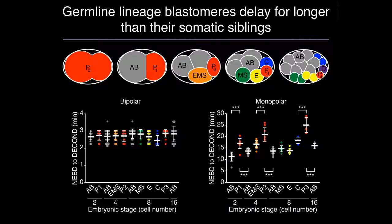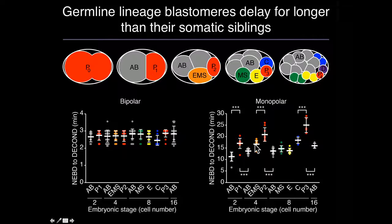When we looked at 2- to 16-cell stage embryos with normal bipolar divisions, the timing of mitosis was relatively invariant across both cell lineages and embryonic stages. When we looked at cells with monopolar spindles, cells in the germline lineage — shown in red — delayed for longer than their immediate somatic siblings and also somatic cells in the next embryonic stage. This last point is particularly important because at each embryonic stage, the germline blastomere is also the smallest cell. Work from Mathilde Ghali in David Morgan's lab has shown that in the C. elegans embryo, as cell size decreases, the length of checkpoint-dependent delays increases.